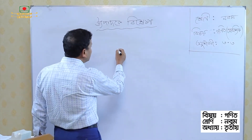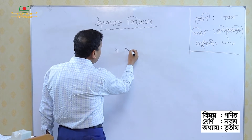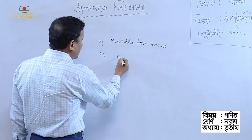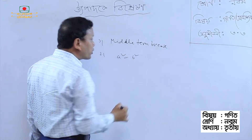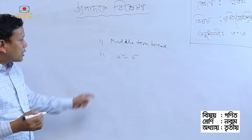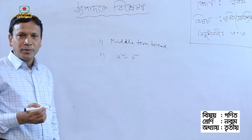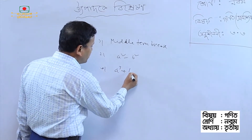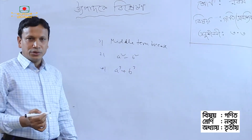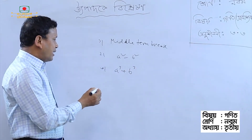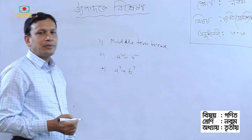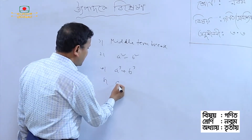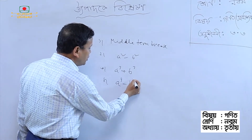The first time we learned, we learned that a squared minus b squared root, and we learned that a cube plus b squared root, and we learned that a cube minus b squared root.